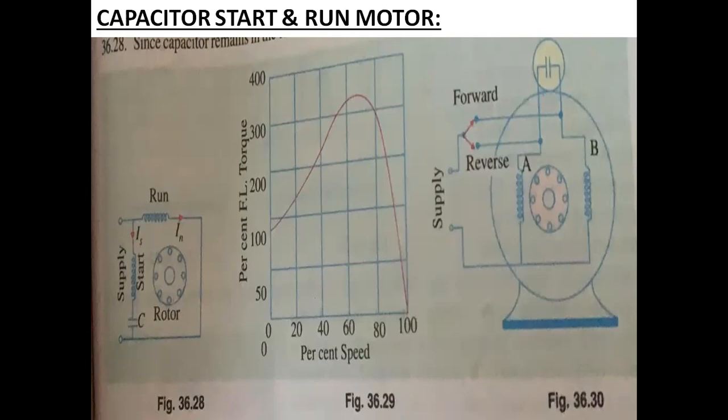There are two types: we can use one capacitor for both running and starting purposes, or we can use two capacitors — the first capacitor for starting and the second for running. If we start with two capacitors, we start with a high value of capacitance and switch to a low value for running. This is called a two value capacitor run motor. If using a single capacitor, it is a single value capacitor run motor.